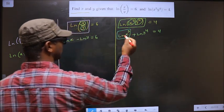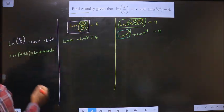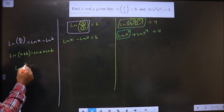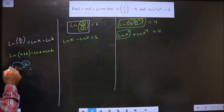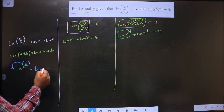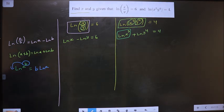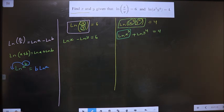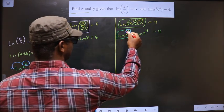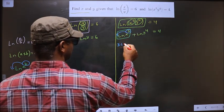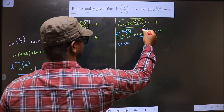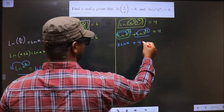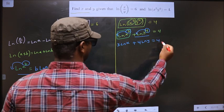Now I apply the power rule: ln(aᵇ) = b·ln(a). Whenever there is a power, the power comes before ln. Here the power on x is 3, so it becomes 3·ln(x). The power on y is 4, so it becomes 4·ln(y). This gives us 3·ln(x) + 4·ln(y) = 4.